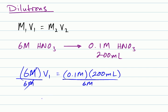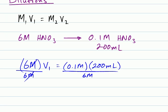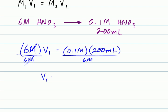So, V1, let me move this down a little. V1 is going to be equal to 3.33 milliliters. That's because the molarity is canceled out. You're left with milliliters.